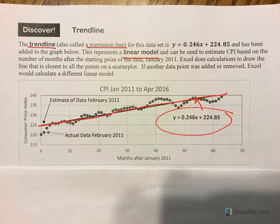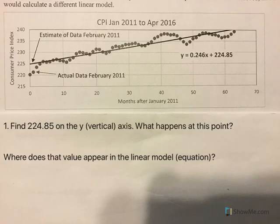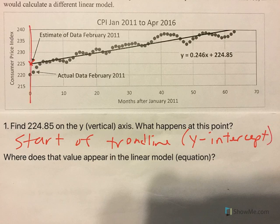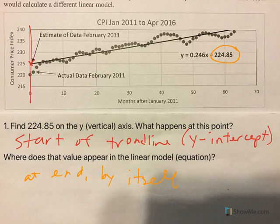This is the graphic we're going to use to answer some questions. Find 224.85 on the y, or vertical, axis — which is roughly here. That is the start of the trend line. We would also call this the y-intercept, because it's where it crosses the y-axis. Where does this value appear in the equation? It's at the end by itself. That's the y-intercept.